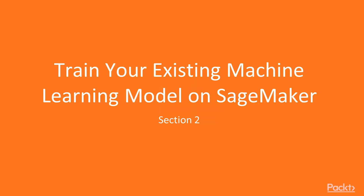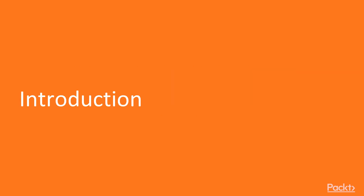Hello and welcome to the second section of this video course. The goal of this section is to take an existing machine learning project and train it on SageMaker. Before we go into the code of the existing machine learning project, I'm going to explain the overall business goal and how it is modeled from a machine learning perspective.